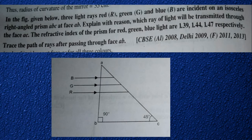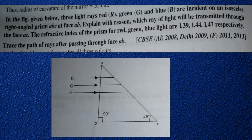In this numerical, as shown in the below figure, 3 light rays — red, green, and blue — are incident on an isosceles right angle prism ABC at face AB. Explain with reason which ray of light will be transmitted through the face AC. The refractive index of the prism for red, green, and blue light are 1.39, 1.44, and 1.47 respectively. Trace the path of rays after passing through face AB.